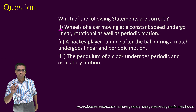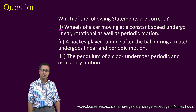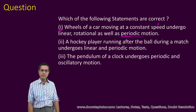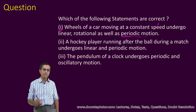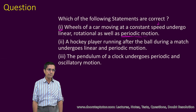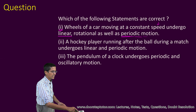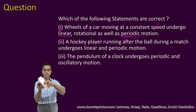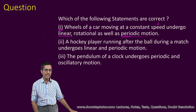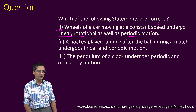Wheels of a car moving at constant speed undergo linear, rotational, and periodic motion. It is periodic because at constant speed the same point on the wheel returns to the same place in the same amount of time. It is linear because the wheel moves in a straight line along with the car. It is rotational because the wheel spins round and round. So this statement is true.